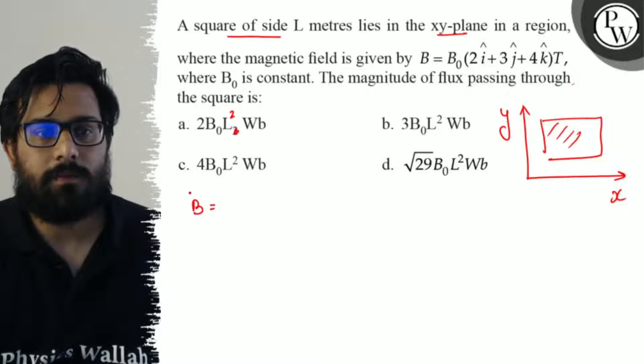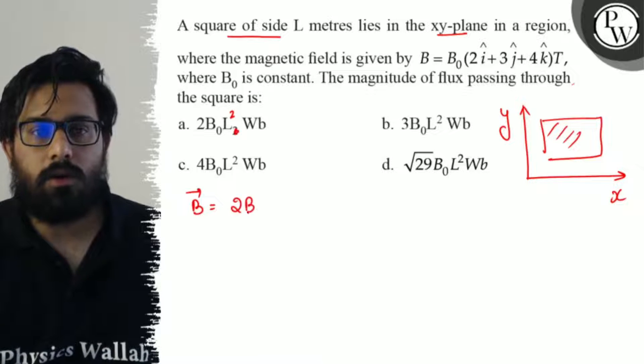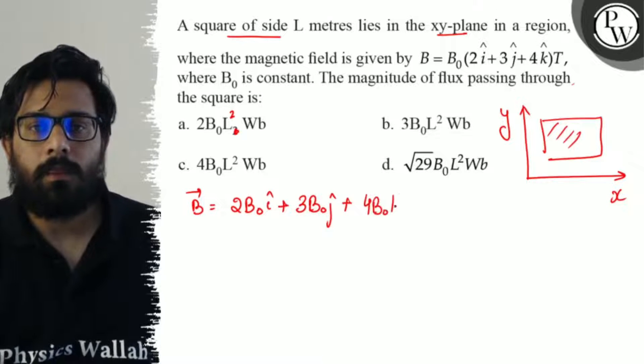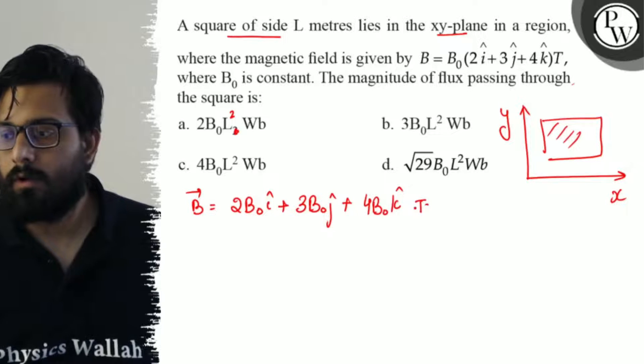This is the value of B. We have 2B₀î + 3B₀ĵ + 4B₀k̂ Tesla.